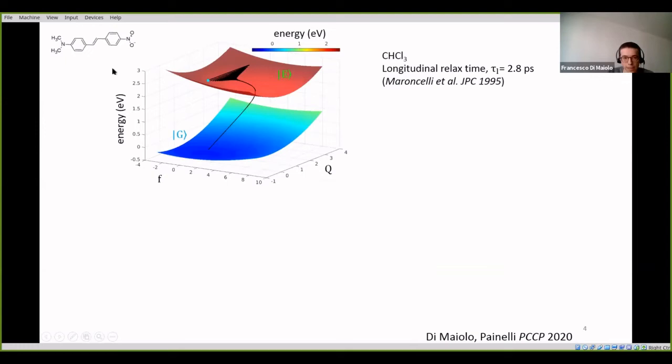So, these are for, again, the DANS chromophore embedded in chloroform at ambient temperature. So, these are the two potential energy surfaces relevant to the DANS chromophore, written as a function of the molecular coordinate, capital Q, and of this additional coordinate, this lowercase f. This is the solvent reaction field that is treated as an effective coordinate, so it's the solvent electric field.